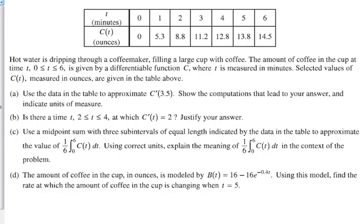Approximating 3.5 by doing the slope between 4 and 3. I'm going to assume it's not a tangent line approximation. It is a secant line.